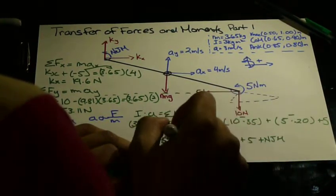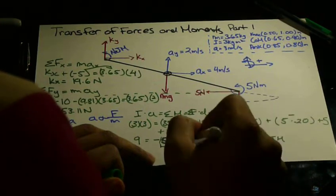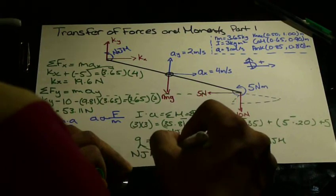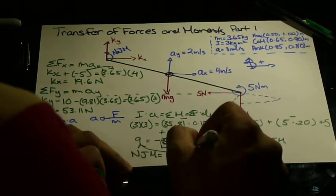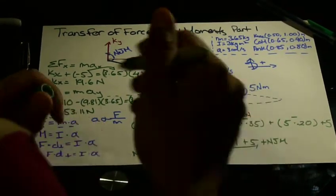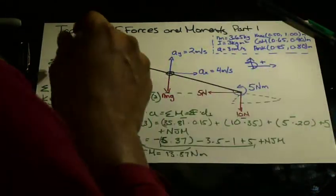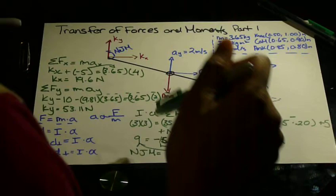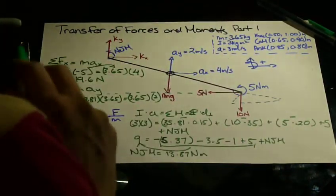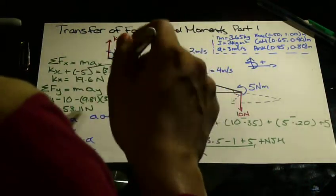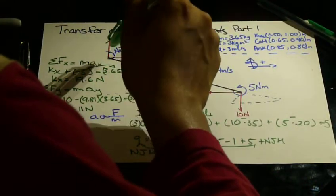So carry all of this over and isolate our net joint moment is equal to 13.87 Newton meters. So we have calculated, we went ahead and calculated the forces acting at the knee and the net joint moment acting at the knee. Now in the next part 2 of this tutorial, I'll show you how to transfer the segments from this shank segment to the thigh segment.